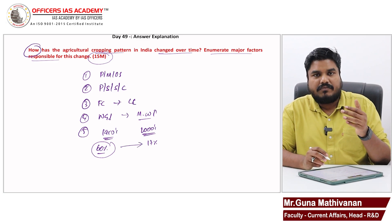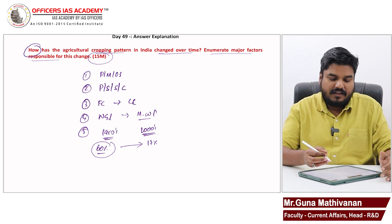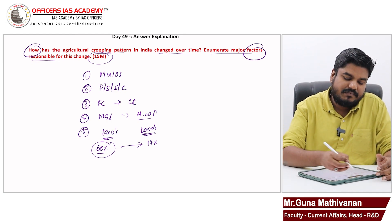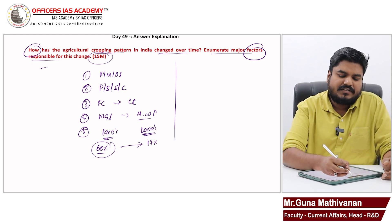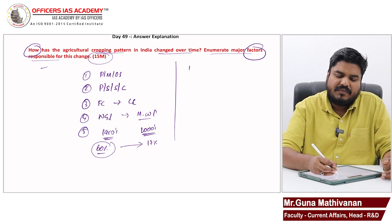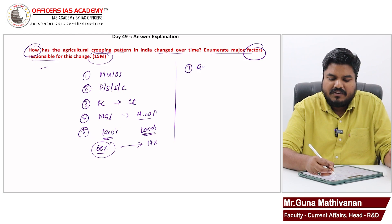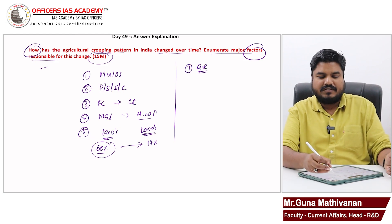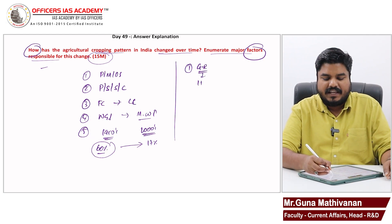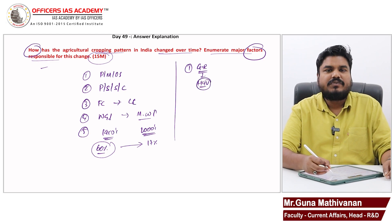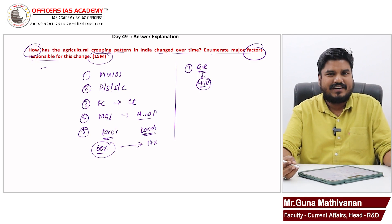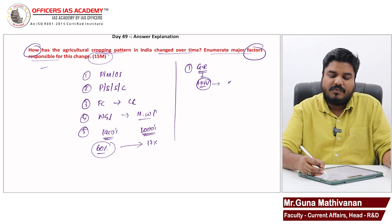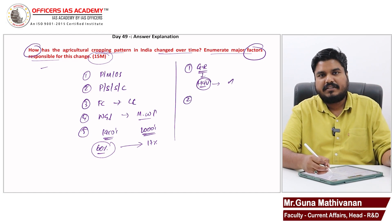What are the factors responsible for this change in cropping pattern? Number one: the Green Revolution. The Green Revolution provided high-yielding variety seeds to ensure the nation's food security. Adopting these high-yielding variety seeds — broadly referred to as the Green Revolution — was one major reason for the change in cropping pattern.